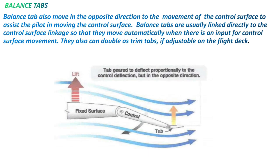Here, the balance tab moves in the opposite direction to the movement of the control so that it will move the control. The tab is fitted on the trailing edge of the elevator. When the tab moves opposite to the movement of the control, the control surface moves so that it will provide the desired movement to the aircraft.